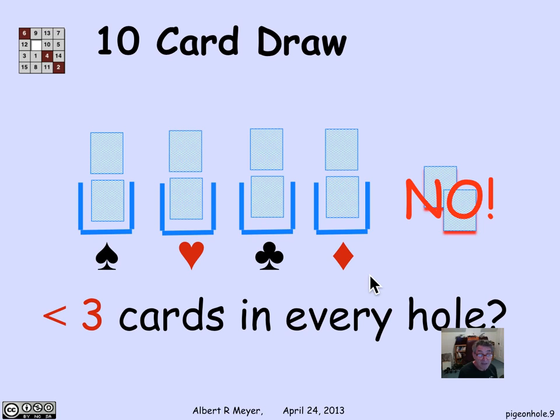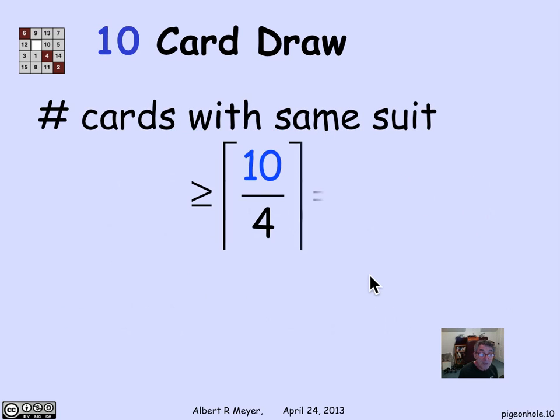You can check that I needn't have any more, of course. So the reasoning here is that the number of cards with the same suit is going to be what you get by dividing up the 10 cards that you have by the four slots and argue that at least one of the slots has to have an average number of cards, namely 10 over 4. They can't all be below average.